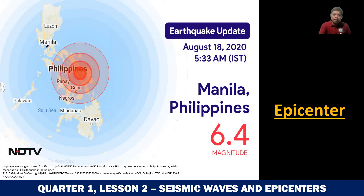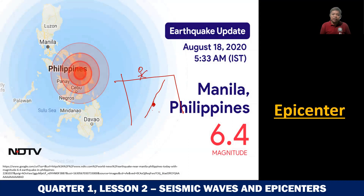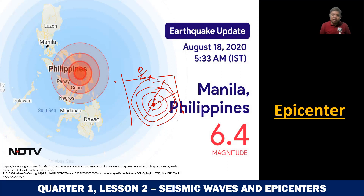For example, this one — imagine this is the ground, so there is a fault line here, and the earthquake started here. The breakage of the ground or rock started here, and that will produce seismic waves. The area directly below on that point is called the focus or the origin of the earthquake. The focus or origin is underground, and the point directly above it on the surface is what we call the epicenter.